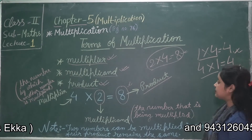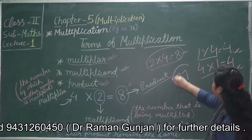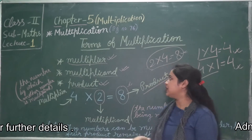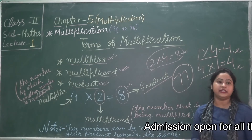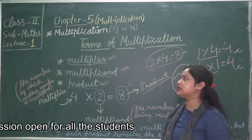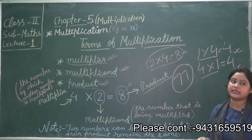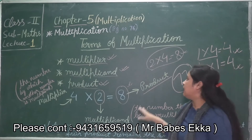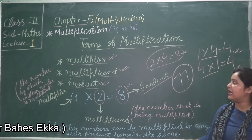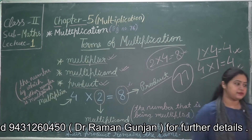In your book on page number 77, the multiplication tables from 1 to 10 are given. For today, you have to learn the multiplication tables of 1 to 10, so that you will be able to solve your exercises. In our next lecture we will solve Exercise 5.1. Thank you, children.